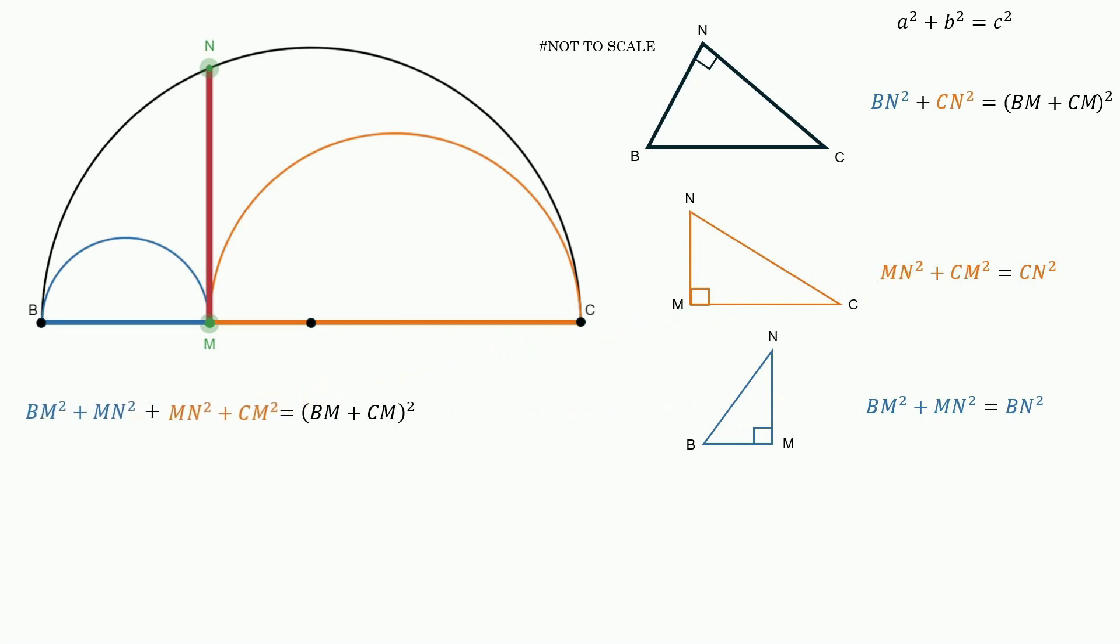Now, a little bit of algebra here, right? bm plus cm quantity squared. Well, that's, of course, bm squared plus 2bm times cm plus cm squared. So let's go ahead and replace that. And let's go ahead and see what we have. This is the same right here. We have a bm squared on both sides. So we could subtract that. It would go away, making 0. We have a cm on both sides. We could subtract that from both sides. They go away. And here's what we've got.